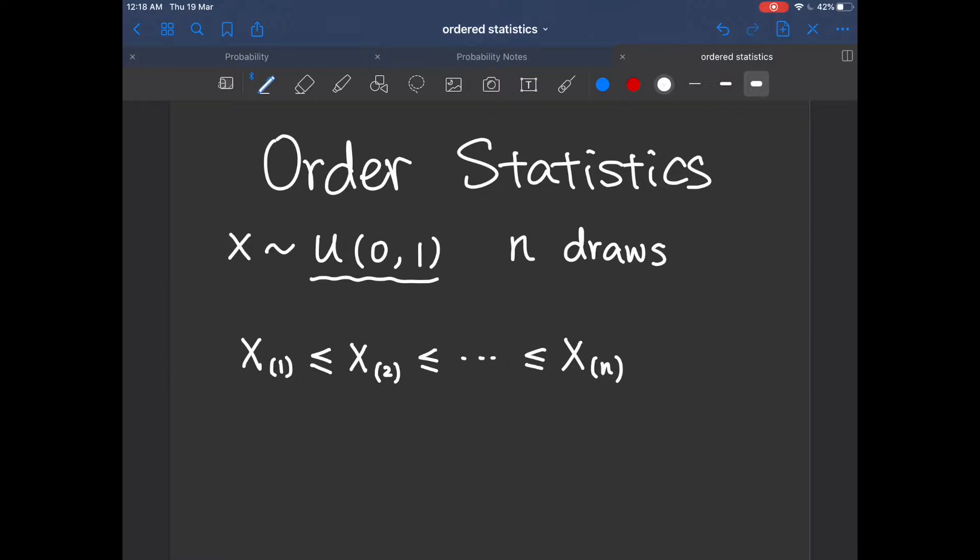And each of these n numbers are actually still random numbers, so we may be interested in their distributions. And from their distributions, we can find things like the expectation of, let's say, Xn. And I'm going to show you guys how to do that.